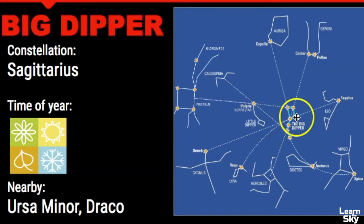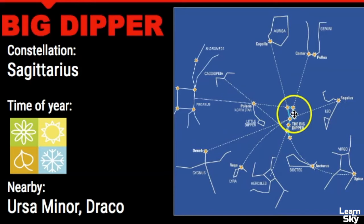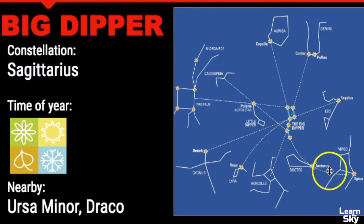You can use other stars to point you to Leo. I often use it to arc to Arcturus and then speed to Spica. So the Big Dipper is a really important asterism because it guides you to so many other stars in the sky.